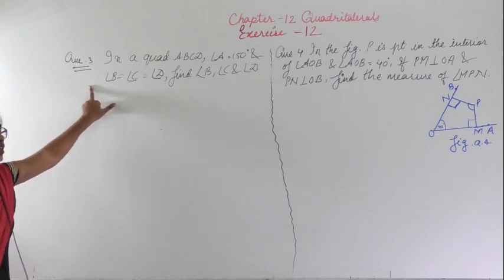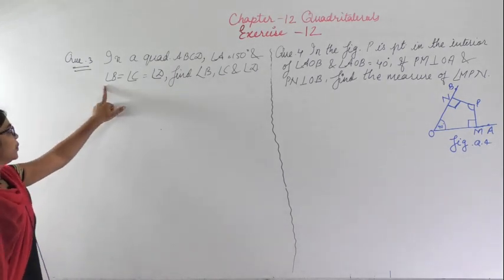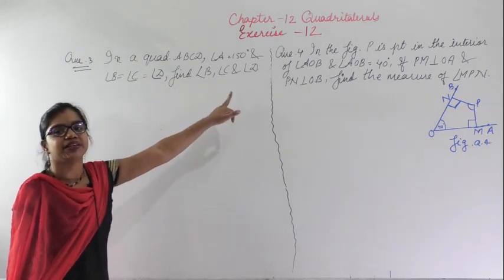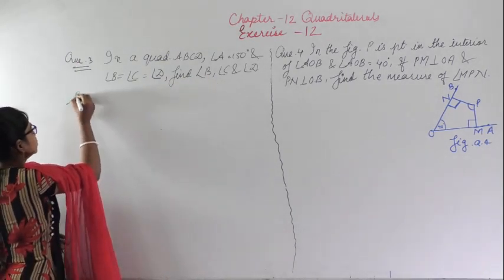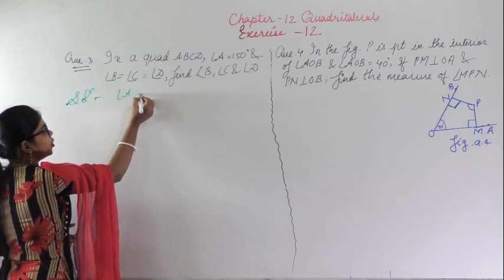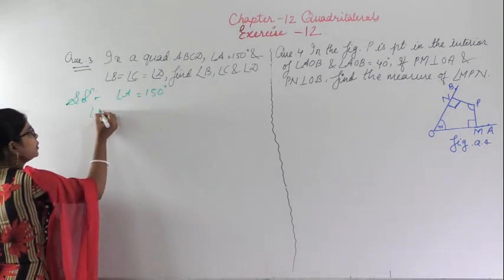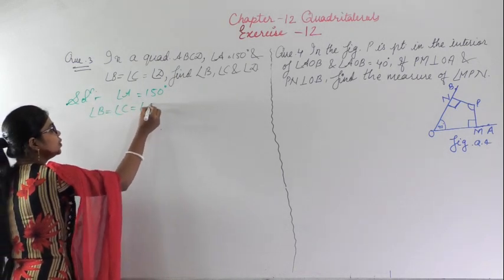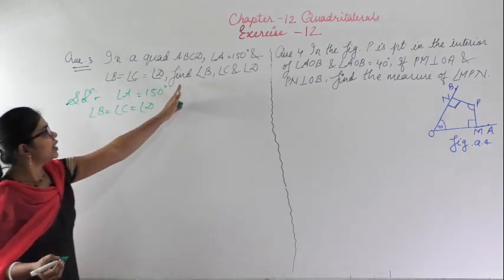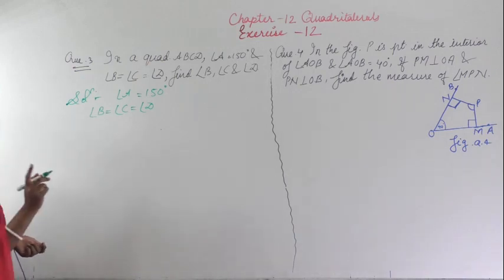Question number 3: In a quadrilateral ABCD, angle A equals 150 degrees and angle B equals angle C equals angle D. We have to find the measure of angles B, C, and D. Since these three angles are equal, and the sum of all angles in a quadrilateral is 360 degrees, we write angle A plus angle B plus angle C plus angle D equals 360 degrees.